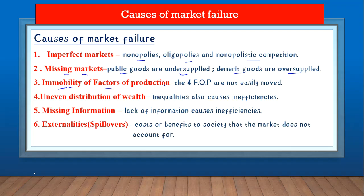Number four is the immobility of factors of production — you cannot move the four factors of production to where they are needed, which causes market failure. Number five is the uneven distribution of wealth. The wealth of the nation is not evenly distributed; there are inequalities, and people cannot participate in the market in the same way.